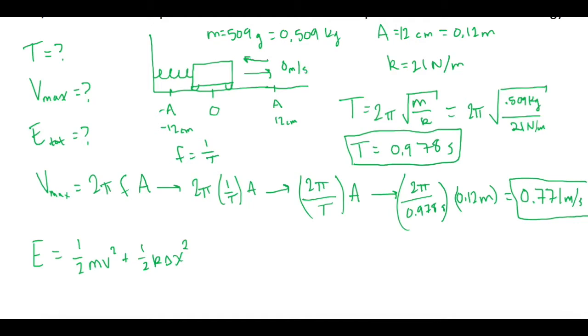So what we're saying is, at that point, all of the energy in this system is stored as spring potential energy. Then when it comes back to the equilibrium point, the spring is not acting on it at all. So here is where we have the maximum speed. It's all kinetic energy at that point.